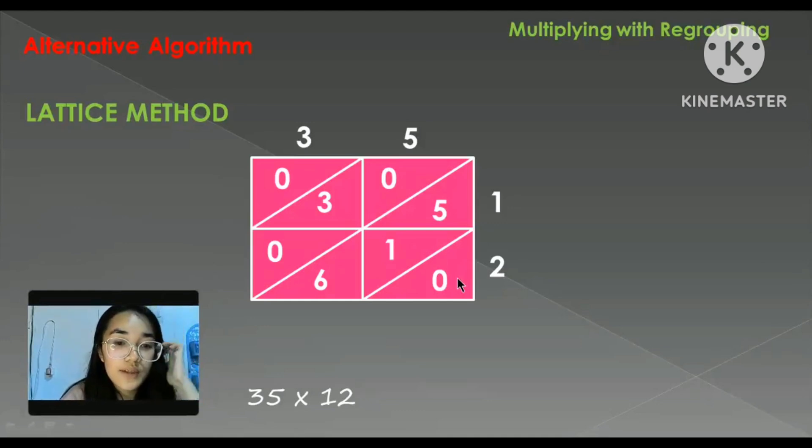Now we have here, we will add this one. So 0, 5 plus 1 is 6, plus 6 is 12, regroup 1. So 3, add the regroup digit, which is 4.